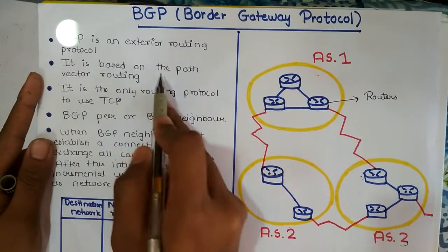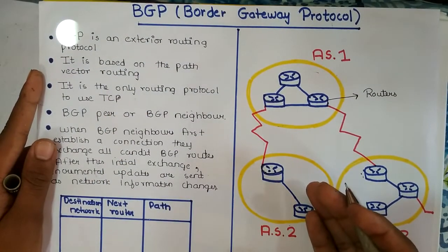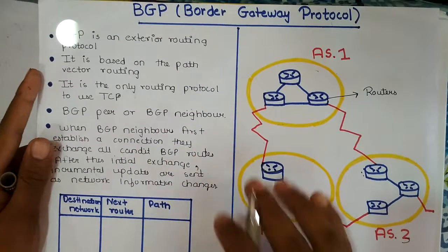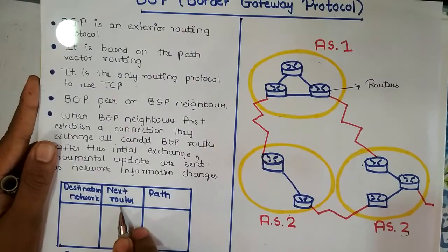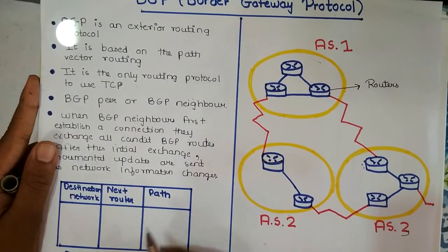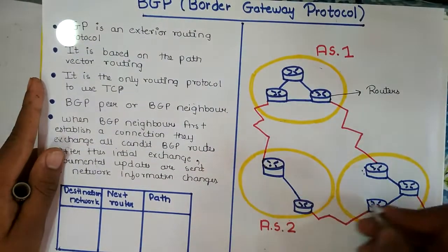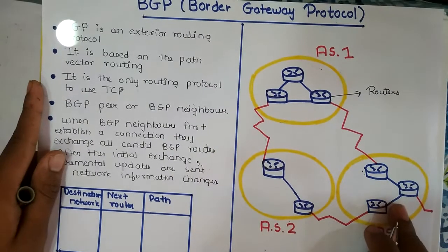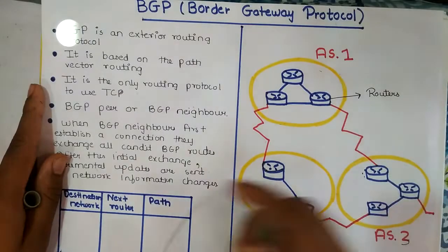It is based on the Path Vector Routing. In Path Vector Routing, the router contains a Path Vector Routing Table. The Path Vector Routing Table contains the destination network, the next router, and the path. Depending upon this routing information, the router exchanges routing information between different autonomous systems and finds the best path to reach the destination.